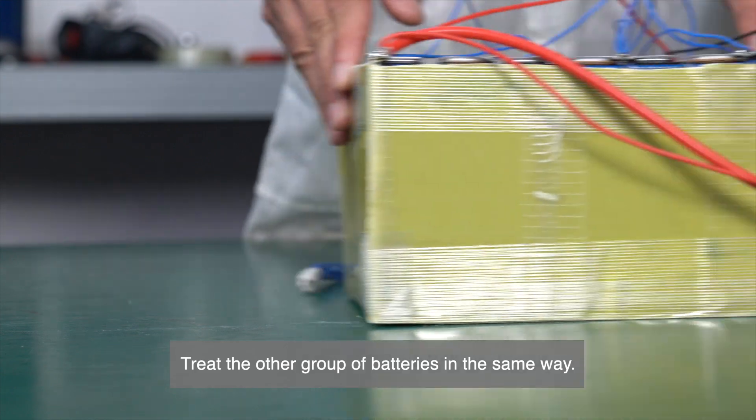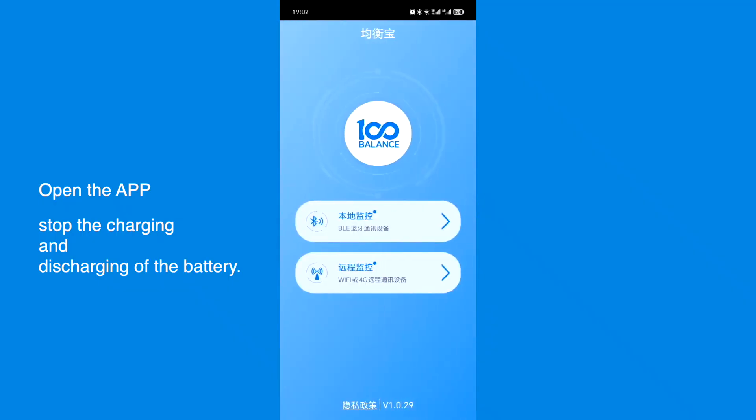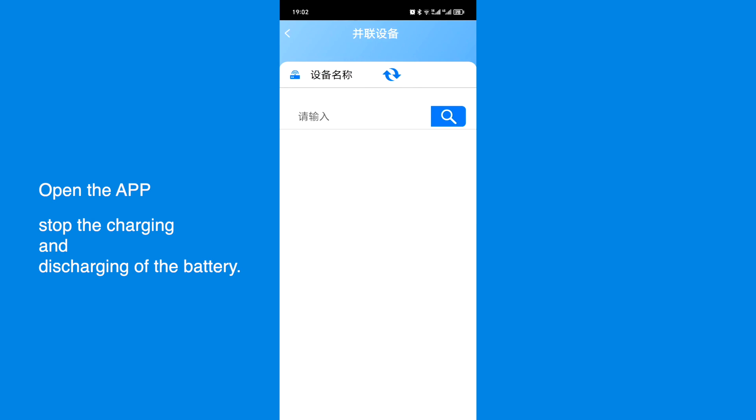Treat the other group of batteries in the same way. Open the APP. Stop the charging and discharging of the battery.